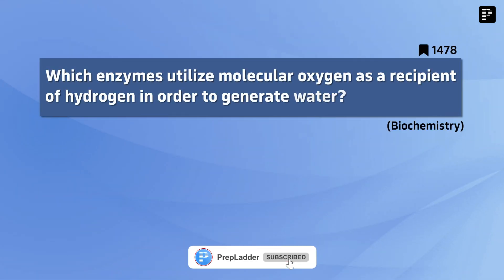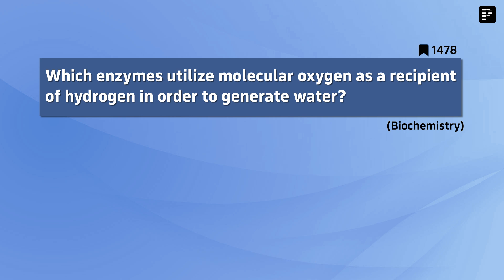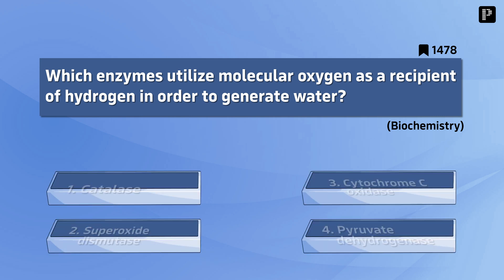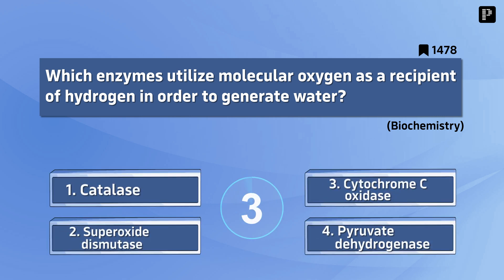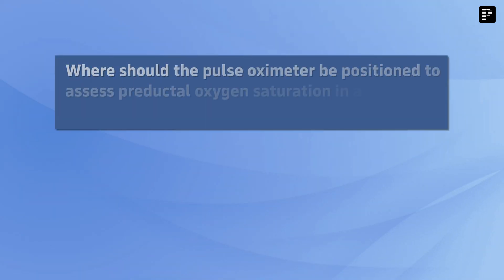Question 9: Which enzymes utilize molecular oxygen as a recipient of hydrogen in order to generate water? The correct answer is Cytochrome C oxidase.